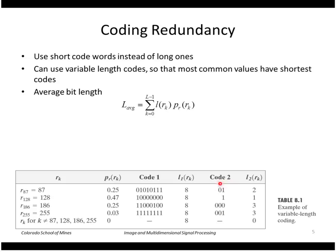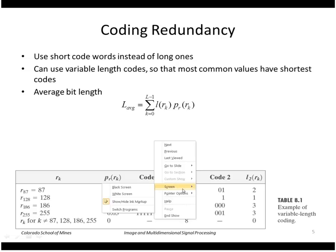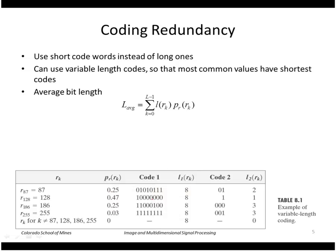But a variable length code might represent it this way. Let's compute the average bit length for the variable length code. If I take the length of each code word, in this case it will be 2 for the first one times 0.25 probability, plus 1 times 0.47, plus 3 times 0.25, plus 3 times 0.03. This comes out to be 1.81 bits.